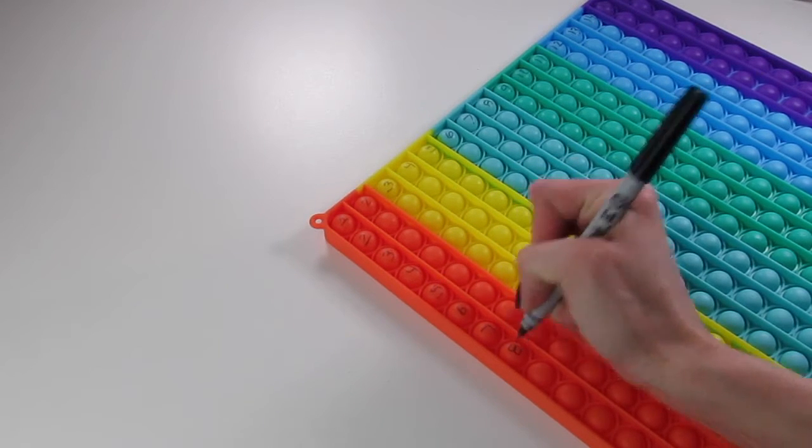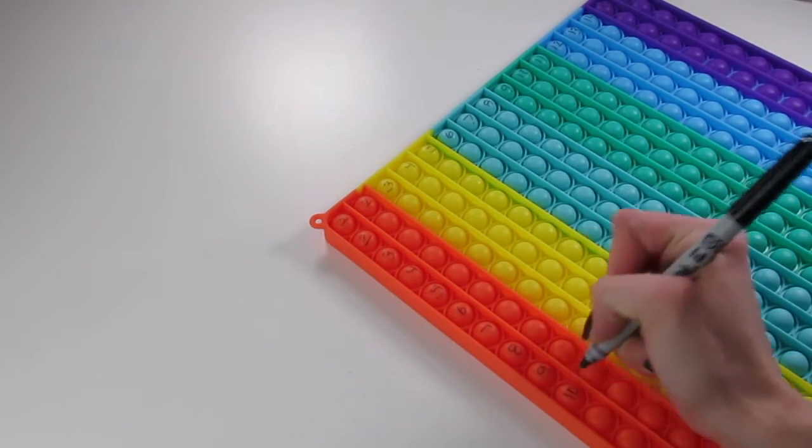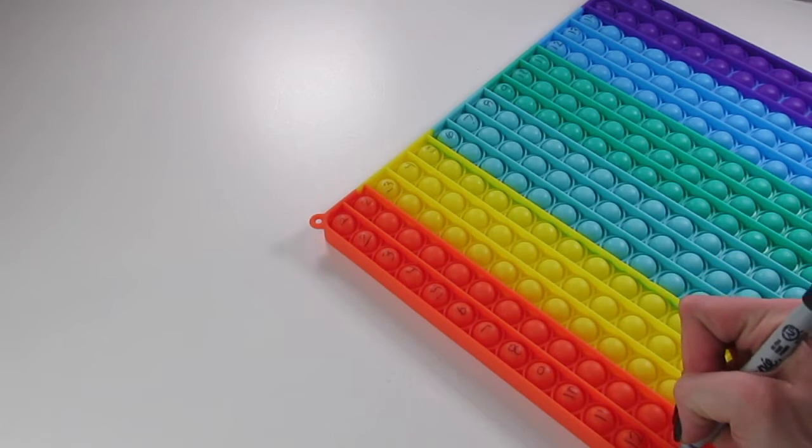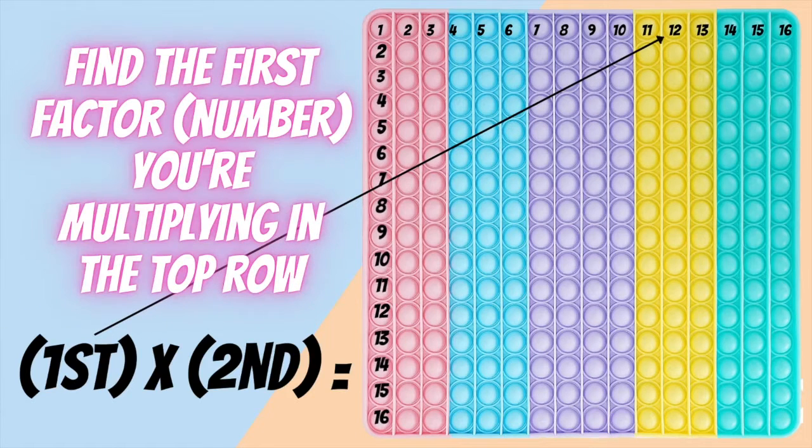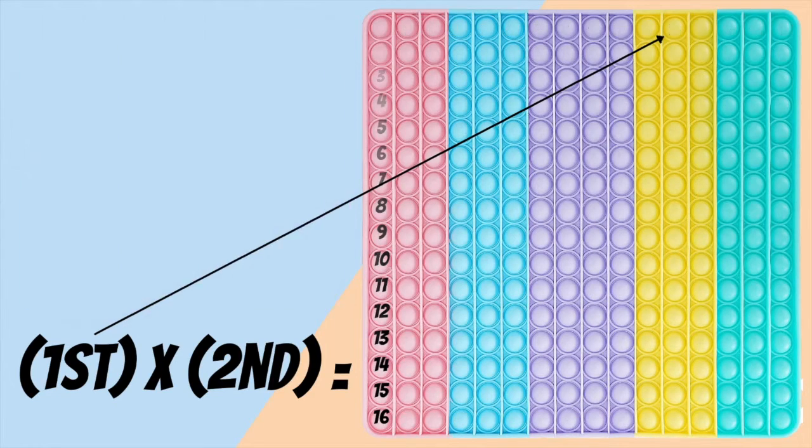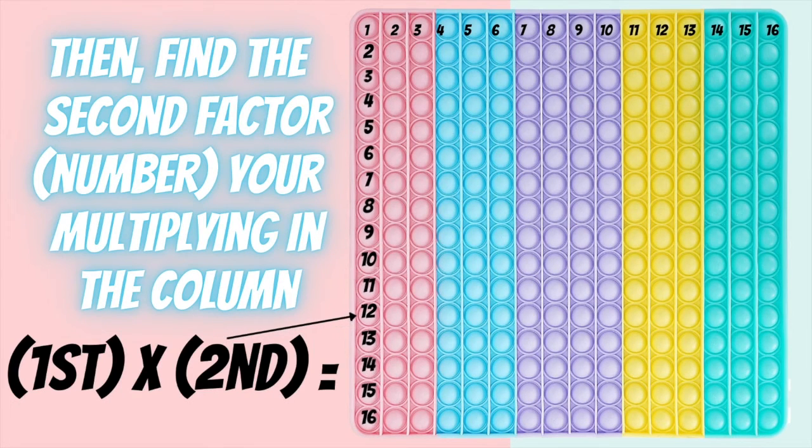I'm sure you've seen or already learned your multiplication facts for 1 through 10. This is just going to give us that extra 11 through 16, which I have some tricks for you guys. So find the first number that you're multiplying by in the top row, and then in the first column, find the second number that you're multiplying by.